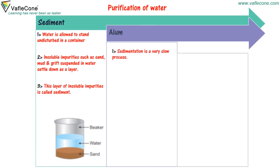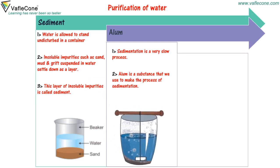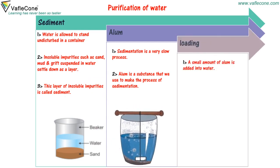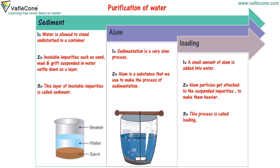Sedimentation is a very slow process. Alum is a substance that we use to speed up the process of sedimentation. A small amount of alum is added into water. Alum particles get attached to the suspended impurities to make them heavier. This process is called loading.